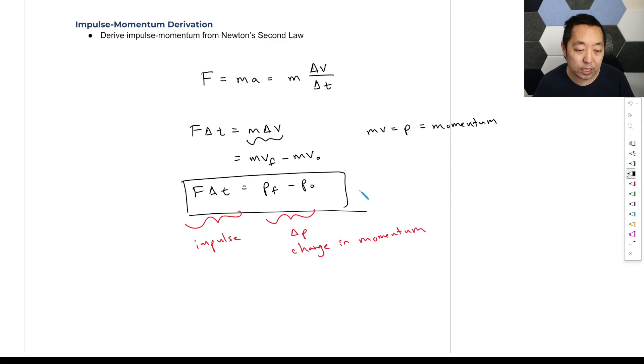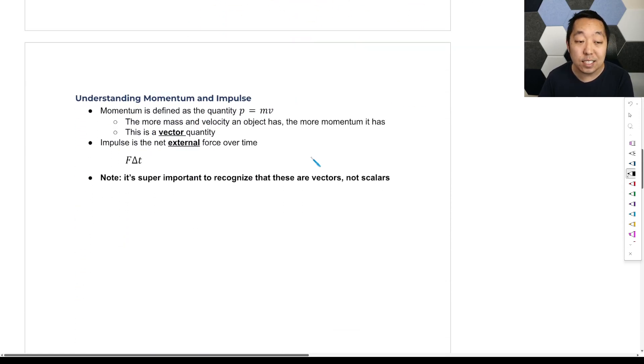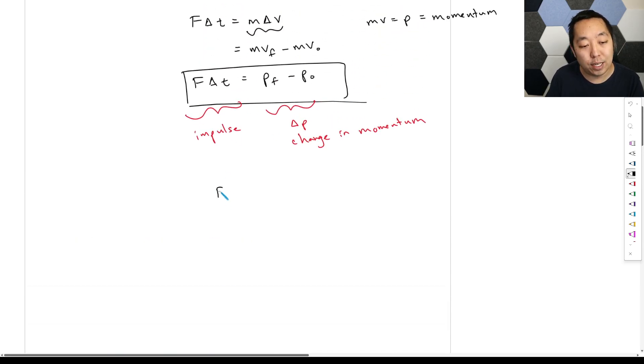Now, a couple things to keep in mind with this quantity. I know it doesn't, because we did a lot of algebra, it doesn't really appear that way. But it turns out that momentum is a vector. It is a vector quantity. So you might think of this as, if you think of very similar, like work was the change in energy, right? This is what we did in the previous unit, work was the change in energy. Here, impulse is the change in momentum.